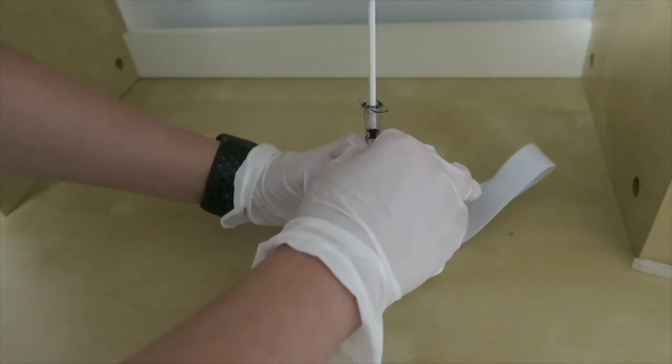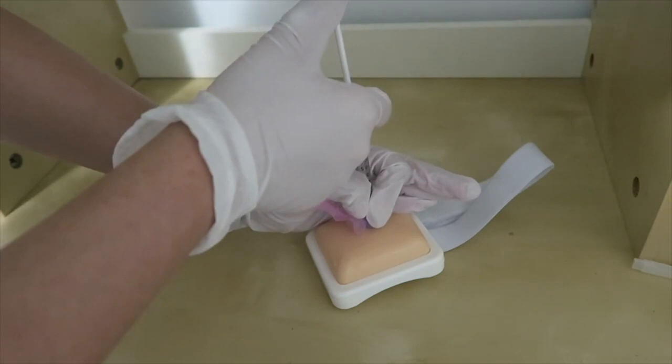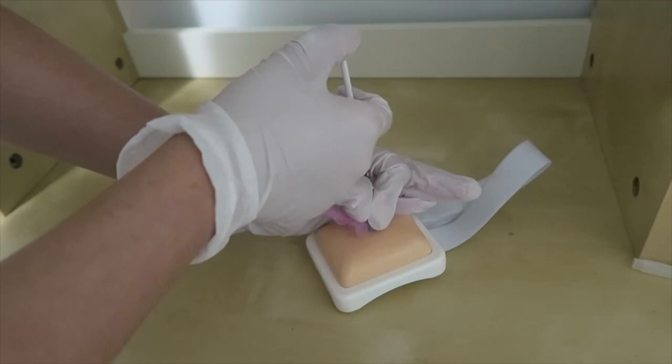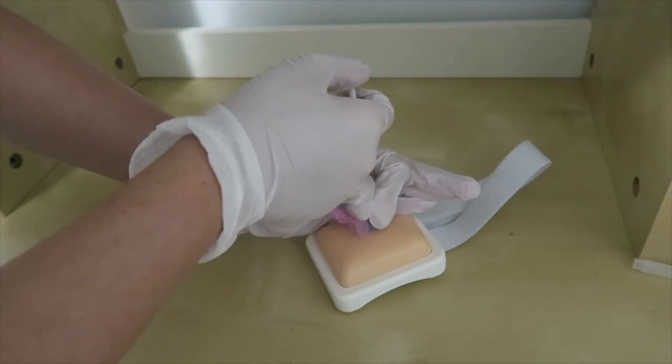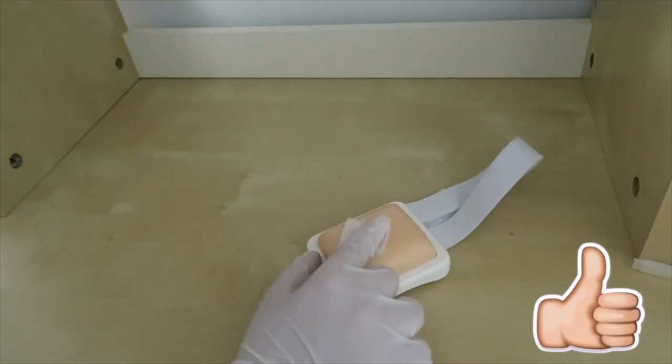And I'll stabilize the base of the needle with my thumb and my index finger like so. And now I'll be injecting the medication slowly at a rate of 10 seconds per milliliter. So we don't actually aspirate for intramuscular injections. So I'll just remove the injection like so and cover it with gauze and apply light pressure.